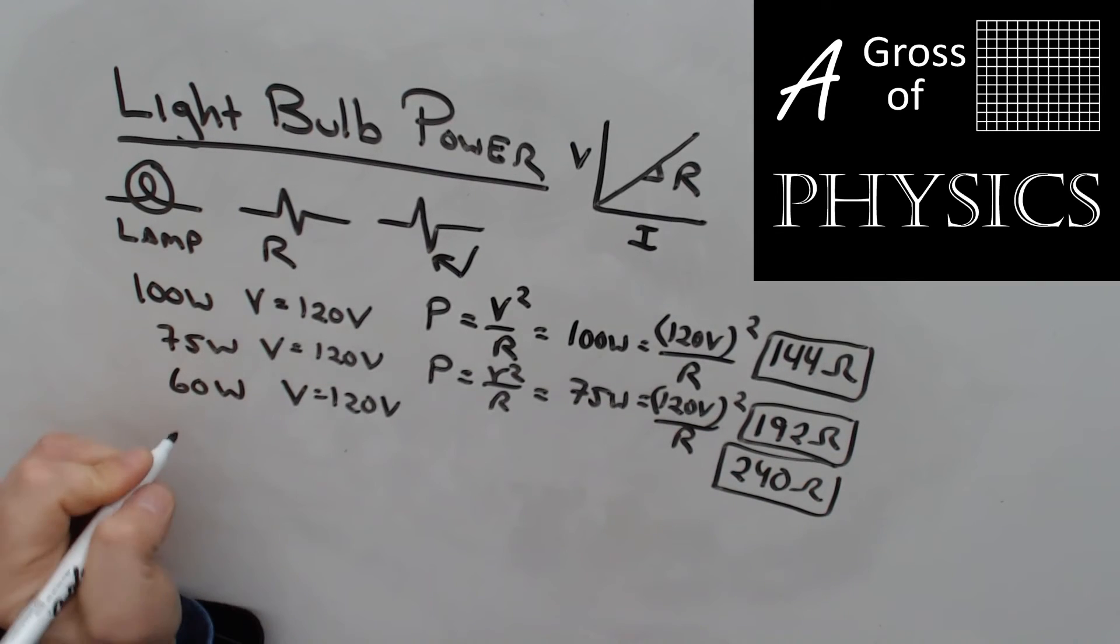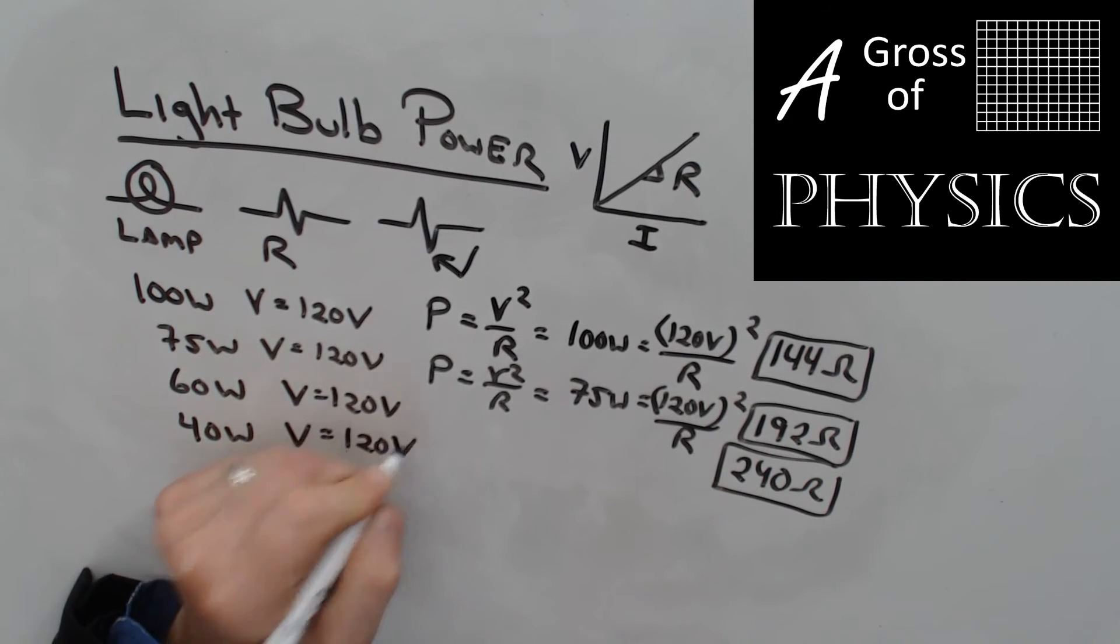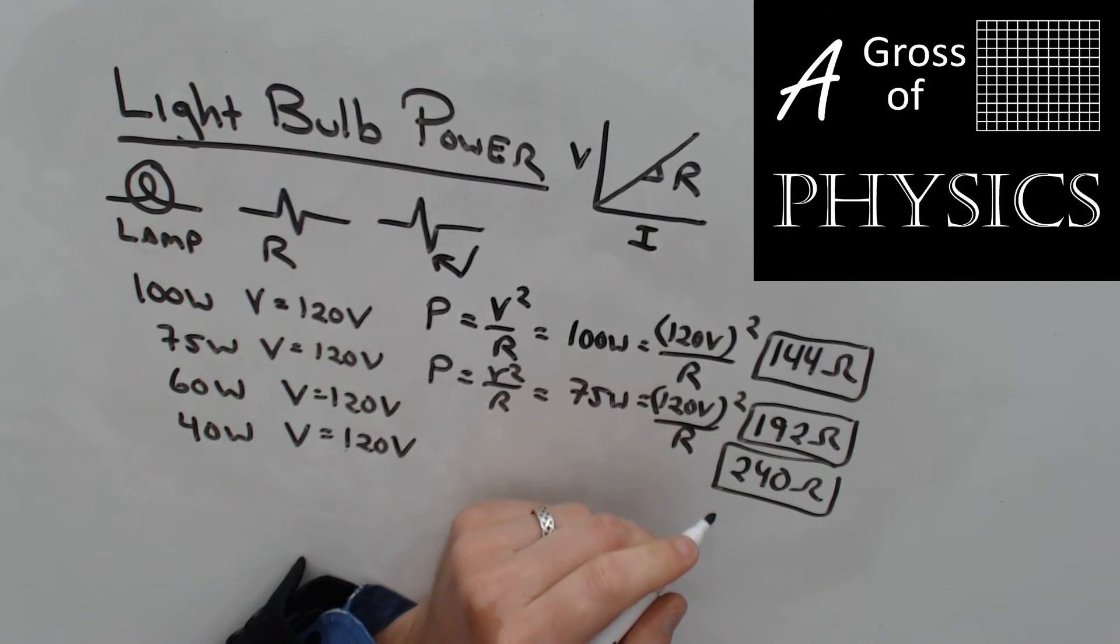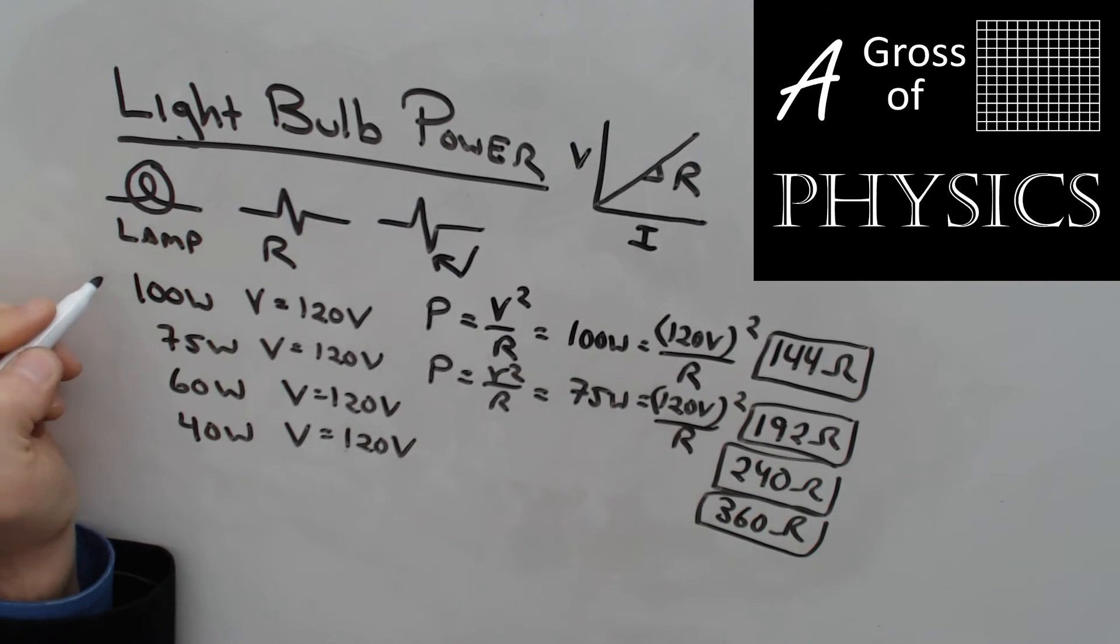We'll just do one more. We'll do 40 watts, 120 volts. 120 squared divided by 40, you have 360 ohms. So the 100 watt bulb is 144 ohms, the 75 watt bulb is 192, the 60 watt bulb is 240, and the 40 watt bulb is 360 ohms.